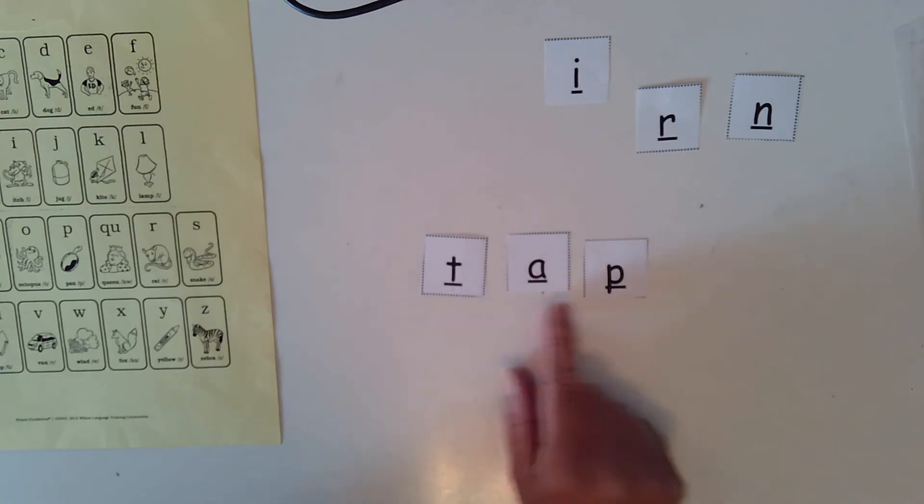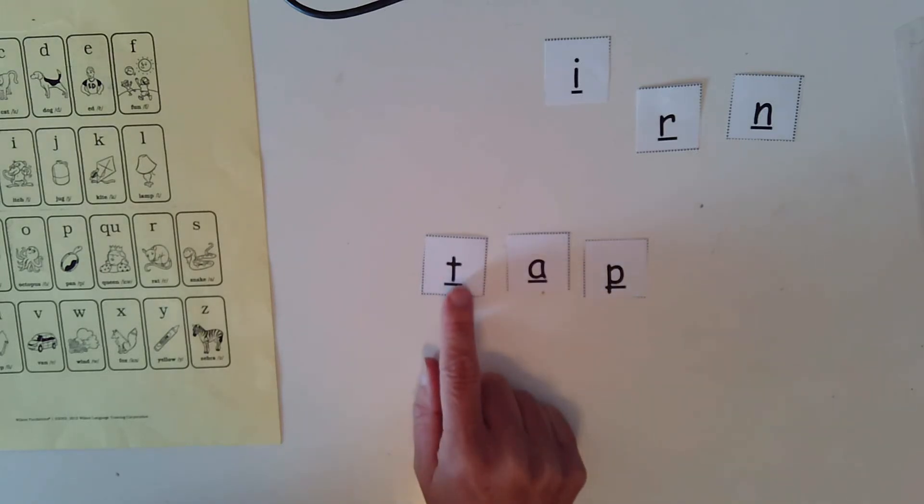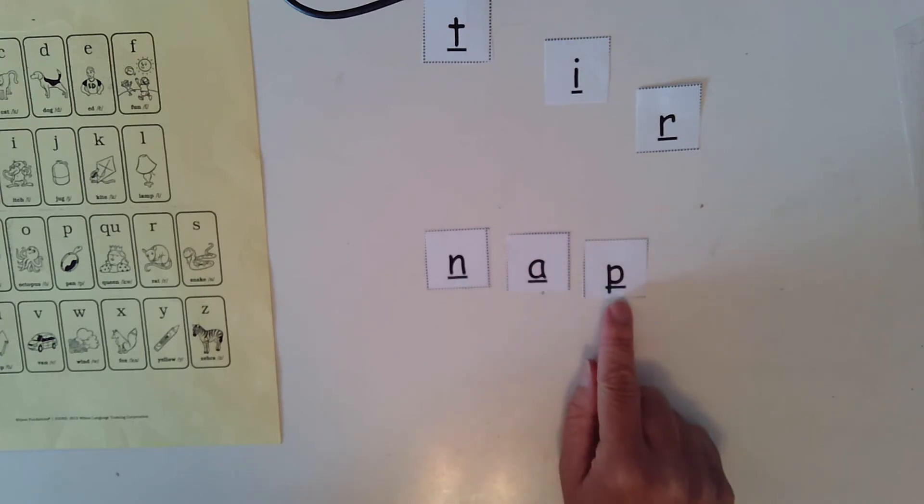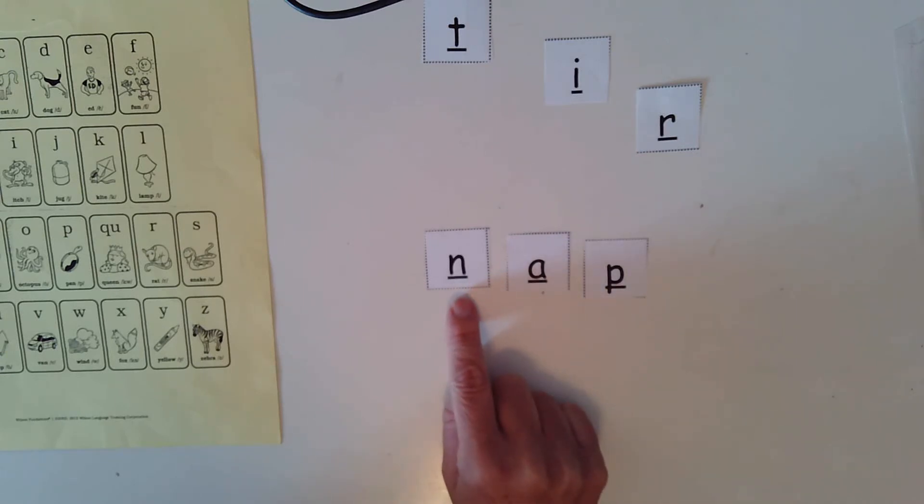Good job. Now we're going to change our beginning sound. We're going to change our T to an N. So I have n-a-p. What word did we make? Nap.